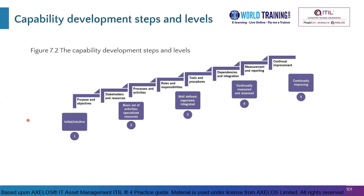This picture depicts the capability development steps and levels. At Level 1 it is initial or intuitive. At Level 2, the following steps are included: purpose and objectives are clear; stakeholders and resources are known; processes and activities are known; roles and responsibilities are clear; and tools and procedures are in place. At Level 3, dependencies and integration occur. Level 4 involves continual measurement and reporting. And Level 5 — continually improving — means continual improvement occurs.